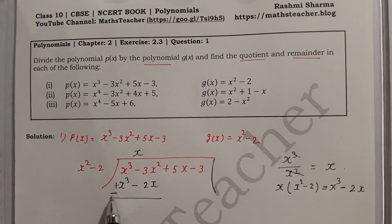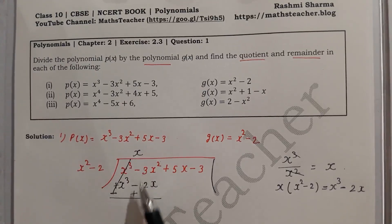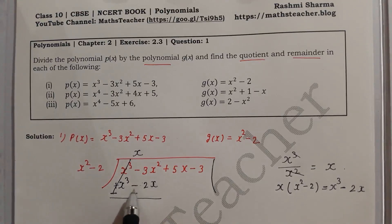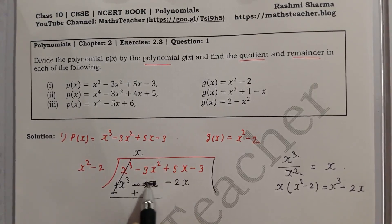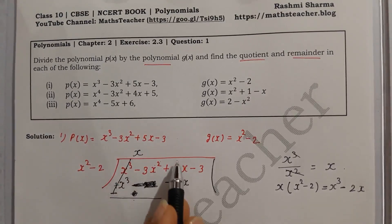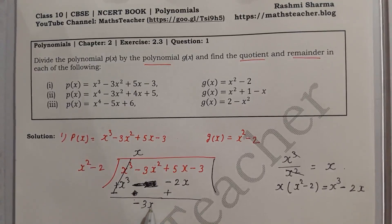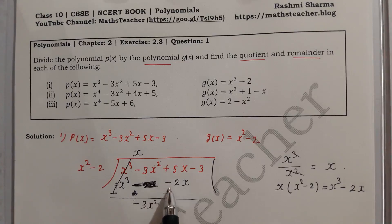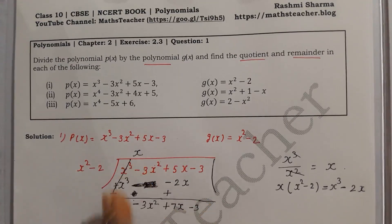We change the sign: x³ and x³ cancel. We arrange the remaining terms by degree. The x terms: we bring down 5x and subtract minus 2x, giving 7x. We also bring down minus 3x² and minus 3. So the new dividend becomes minus 3x² plus 7x minus 3.